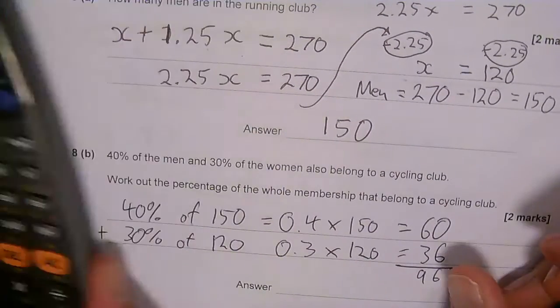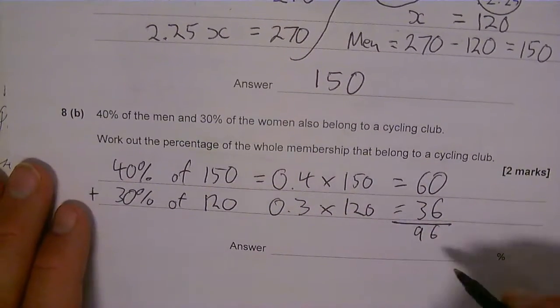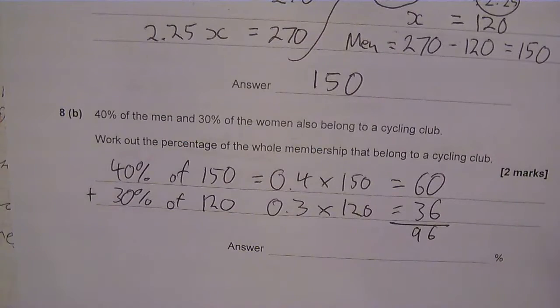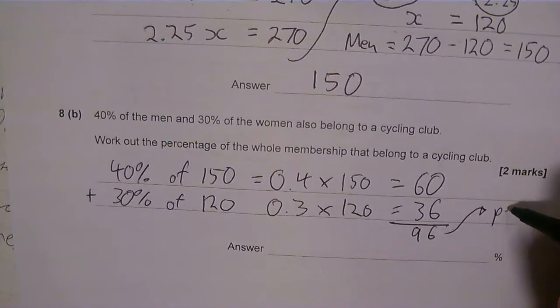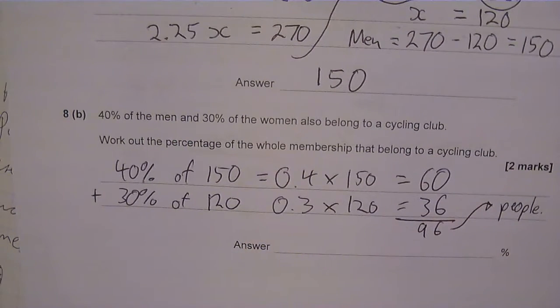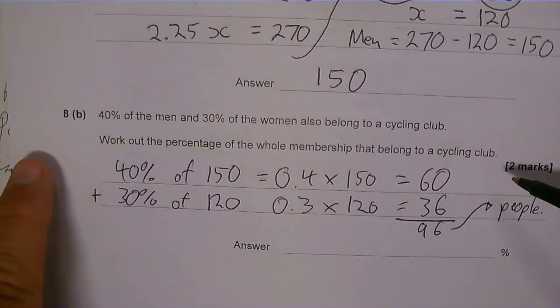So altogether I've got 96 people in the cycling club. So 96. Now that's 96 people - I'm not quite finished. Work out the percentage of the whole membership that belong to the cycling club.